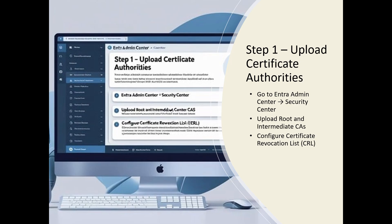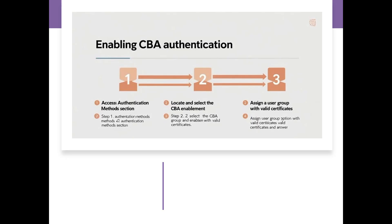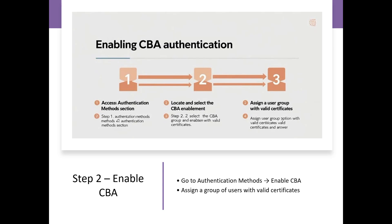Next, enable certificate-based authentication by going to Authentication Methods, then Certificate-Based Authentication, and turning it on for a specific Azure AD group. Rather than enabling it for all users, first test it with a pilot group — for example, a group of two or three users — so you can validate certificate distribution before broader rollout.